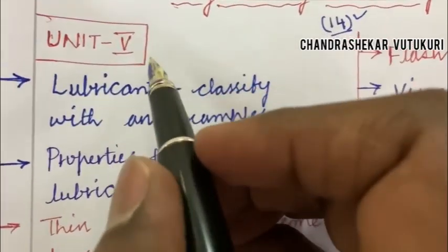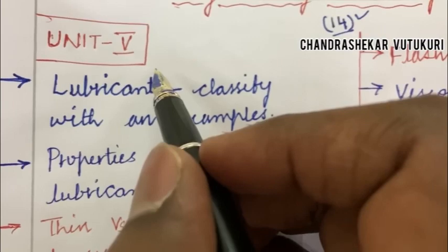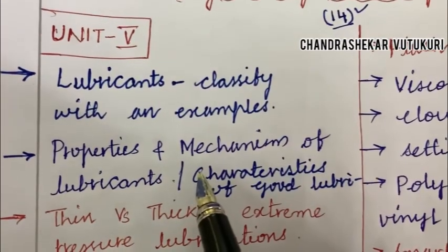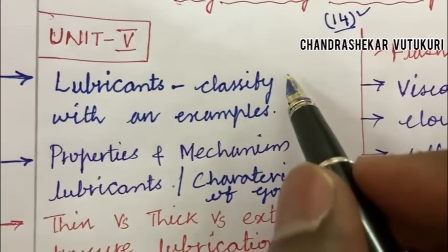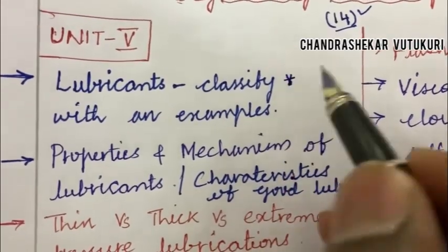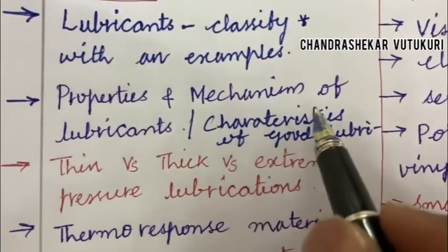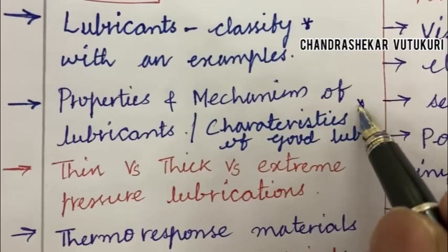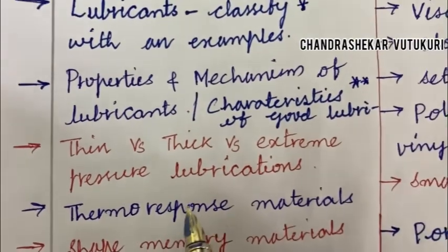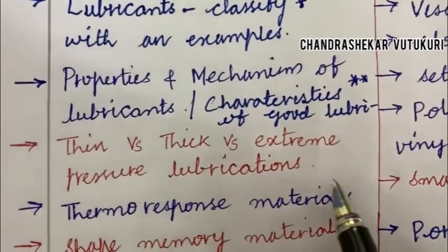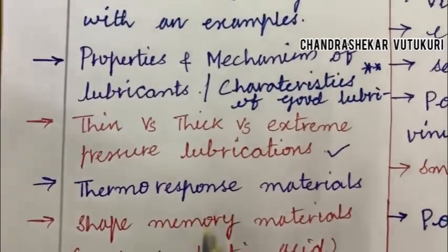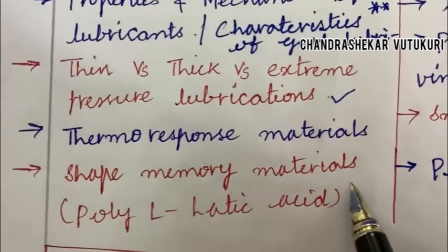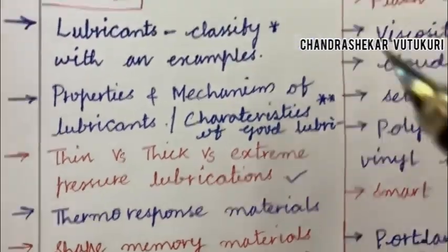The first unit I have taken into consideration is Unit 5, because you are taking Mid 2 and you are supposed to concentrate on all the parts which I am going to highlight. Lubricants and their classifications with an example is said to be a topmost question. The properties and mechanism of lubricants and the characteristics of good lubricants may also be one of the highlighted questions in the examination. Thin versus thick versus extreme pressure lubrication differences, thermoresponsive materials, and shape memory materials related to polylactic acid are also said to be topmost questions.